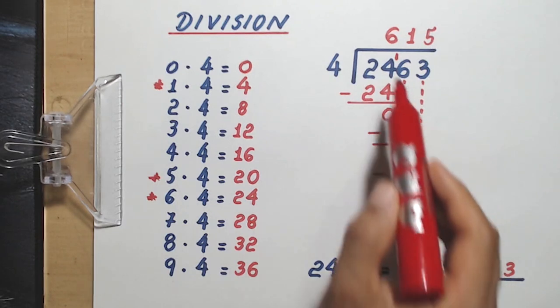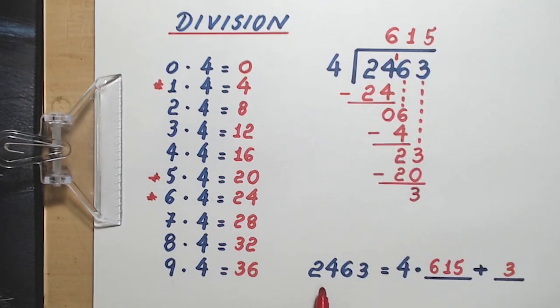By doing so, you will find the dividend. What I'm telling you is that the dividend is always equal to the product of the divisor and the whole quotient, added the remainder. In this case, we can say that 2,463 equals 4 times 615 plus 3.